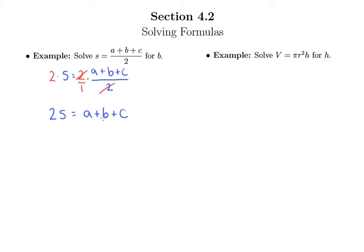Now you just have to keep in mind here that a and c are just numbers. So if we had a number plus our variable, we would take that number away from both sides. So we would have 2s minus a equals b plus c. And then if we have a variable plus a number, we would again take that number away to isolate our variable. So it turns out that b is equal to 2s minus a minus c.